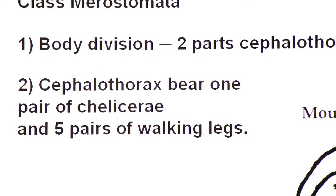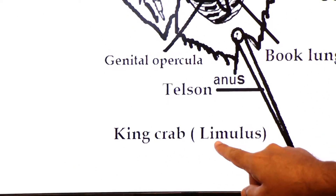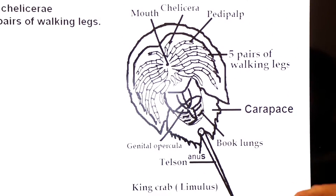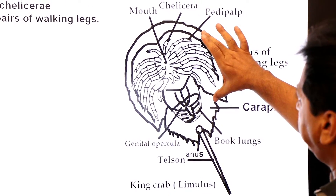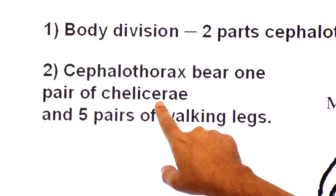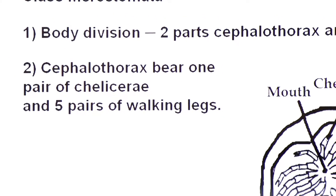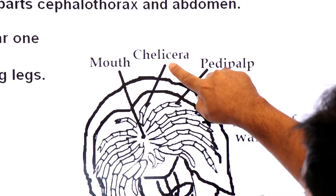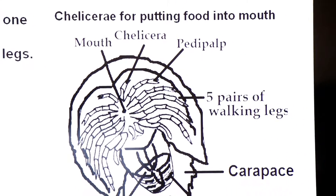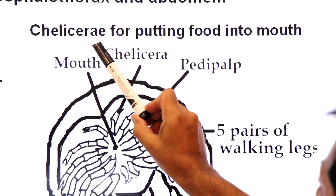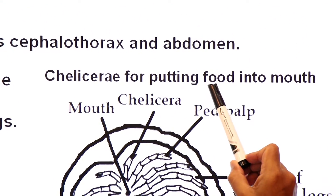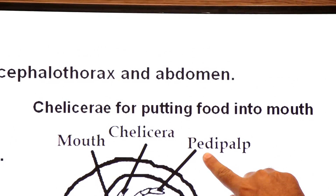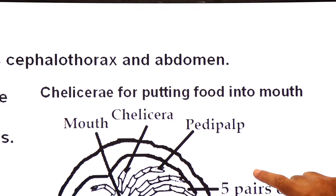A member of this class is the king crab, known as Limulus. Looking at the diagram, the first part is the cephalothorax. Here you see an appendage called chelicera — in singular chelicera, in plural chelicerae. Chelicerae are the appendages used for putting food into the mouth. There is also an appendage called the pedipalp, which is a sensory organ — an organ of touch.